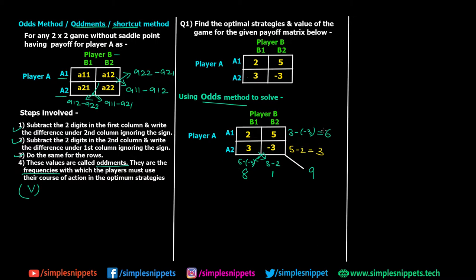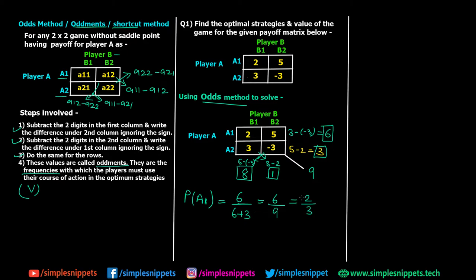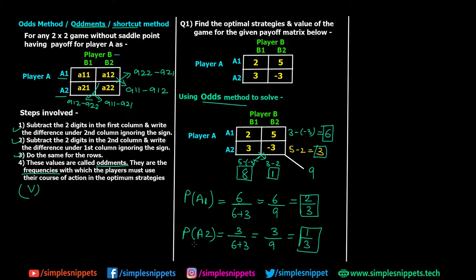So we've found the oddments: oddment for A1 is six, oddment for A2 is three, oddment for B1 is eight, and oddment for B2 is one. Since this is a mixed game with no saddle point, we calculate individual probabilities. Probability of A using A1 equals the oddment of A1 divided by the total oddments: six divided by six plus three equals six over nine, which is two-thirds. Probability of A using A2 equals three over nine, which is one-third — or simply one minus P(A1).